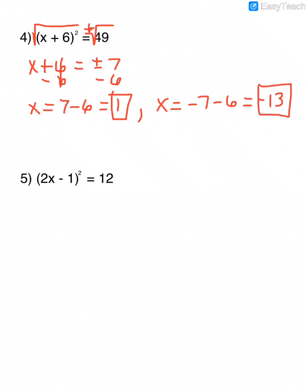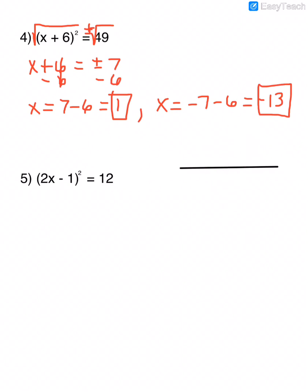Every problem had two solutions — plus or minus 2, or plus or minus 4. This problem just happens to give two different answers: 1 and negative 13. That means on our parabola, instead of being symmetric on both sides of the y-axis like plus or minus 2 would be, it's lopsided, crossing the x-axis at 1 and negative 13.